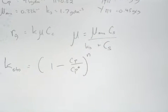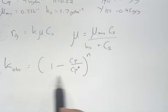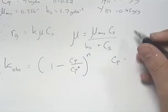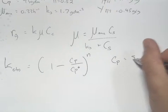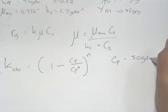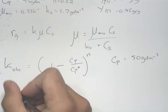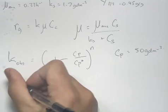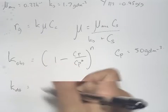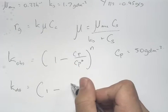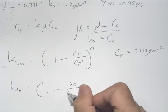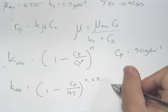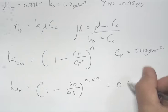We can initially calculate k_OBS. The question states that Cp, the product concentration, is equal to 50 grams per decimetre cubed. From this, we can calculate k_OBS to be equal to 1 minus 50 over 93 to the power of 0.52, giving us a value of 0.67.